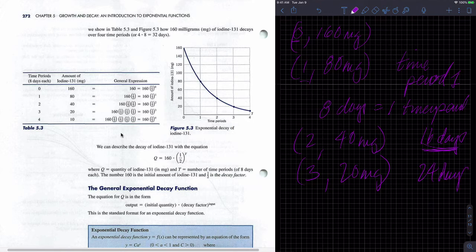After four, I'll have 32 days. After four time periods, I only have 10 milligrams. Now notice, I will never get to zero because I'm just cutting in half each time. I'm just cutting in half each time. I'm never going to get to zero. There's always going to be some amount left.